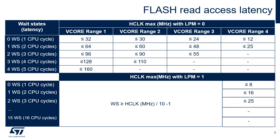To correctly read data from the flash memory, the number of wait states, latency, must be correctly programmed according to the frequency of the CPU clock, HCLK, and the internal voltage range of the device, vCore. The table below shows the correspondence between wait states and CPU clock frequency. The flash memory supports a low-power read mode when setting the LPM bit in the flash access control register, Flash ACR.